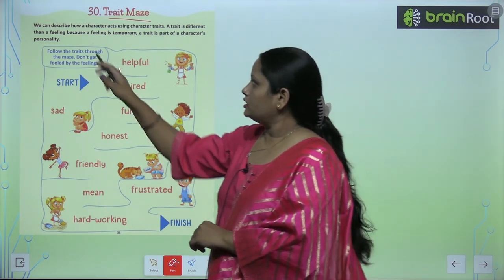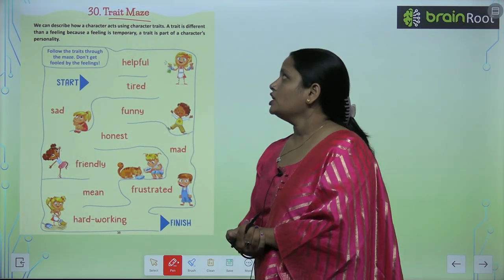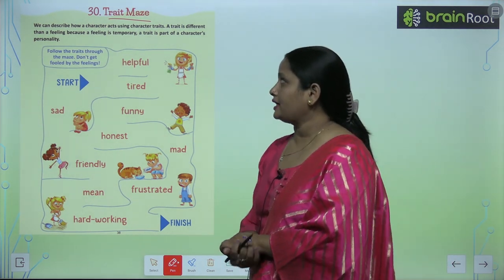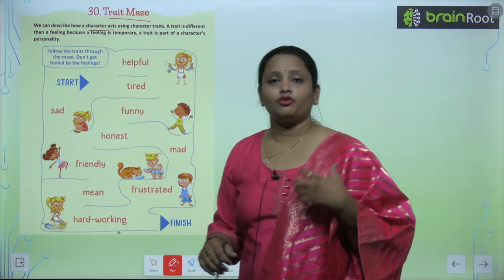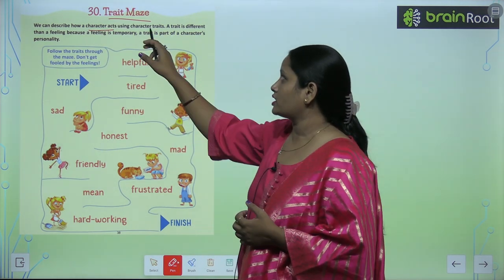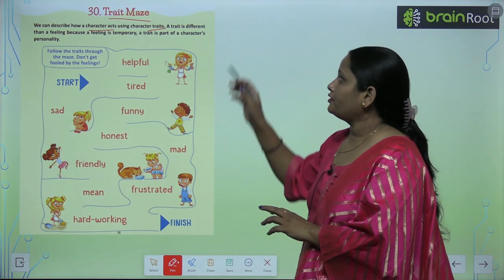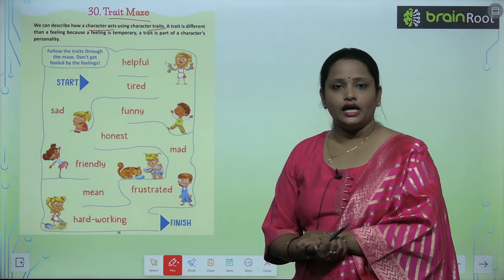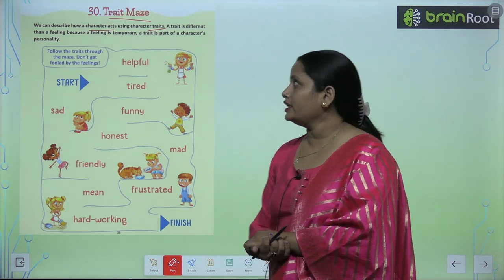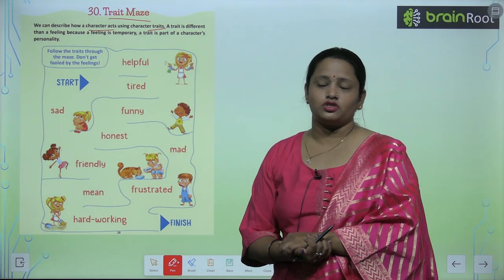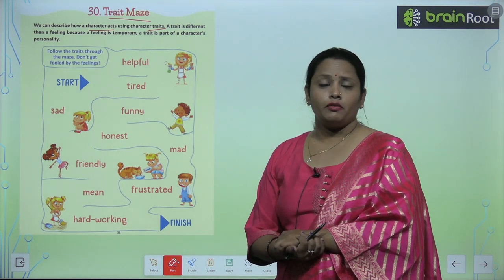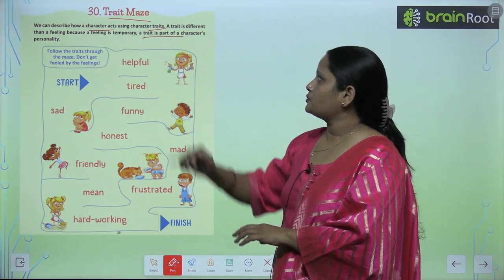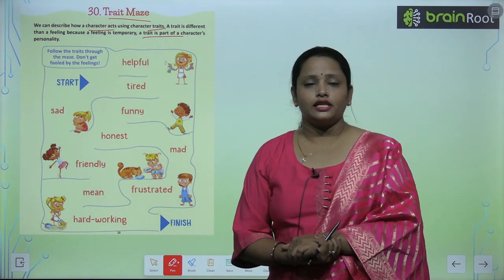We can describe how a character acts using character traits. We can understand what a character does — how he behaves, how he acts. A trait is different from a feeling. A feeling is temporary, like 'I have a lot of pain' or 'I am very happy today.' But a trait is part of a character's personality.